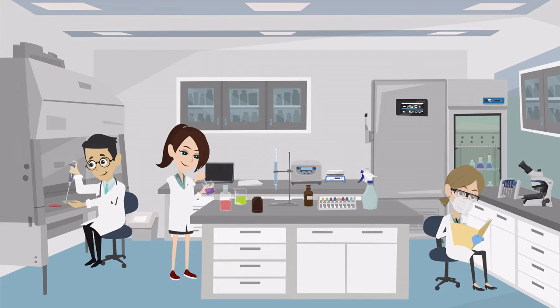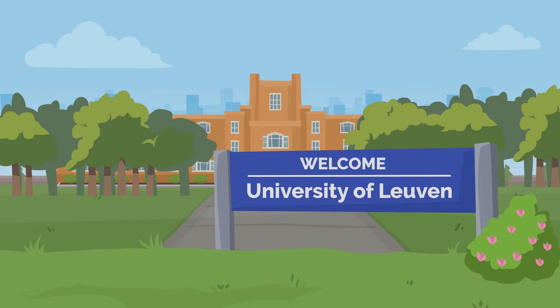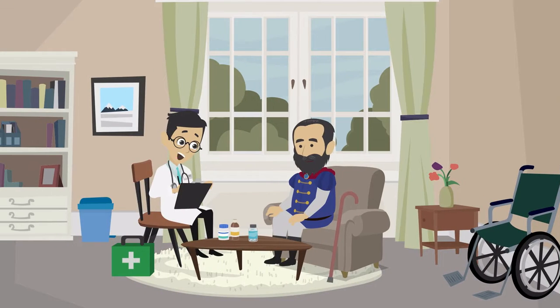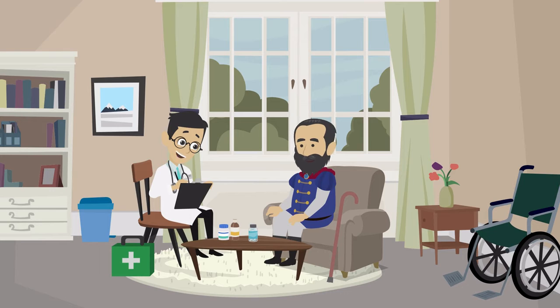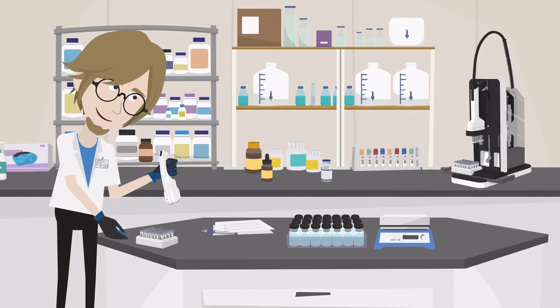Andreas Vesalius' family had a deep involvement in medicine. His great-grandfather taught medicine at the University of Leuven. His grandfather served as the royal physician to Emperor Maximilian, and his father worked as an apothecary for the emperor.